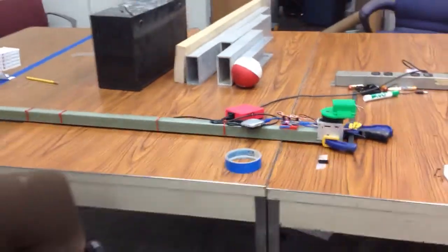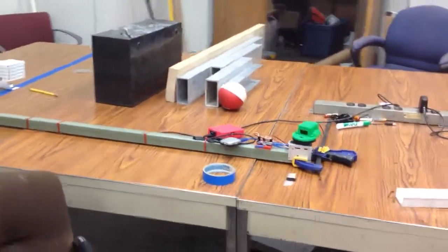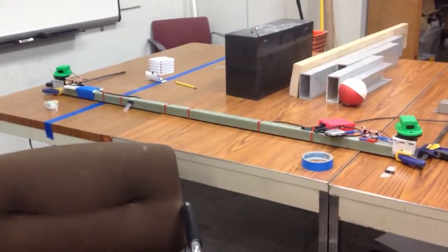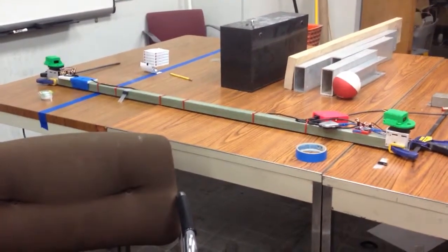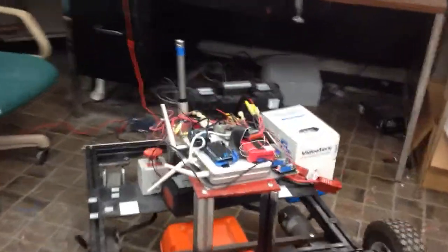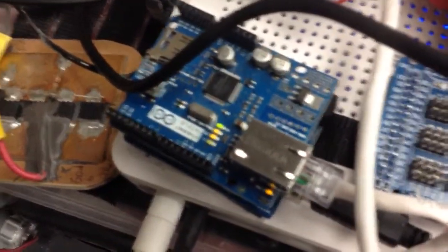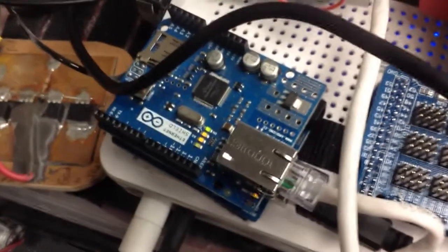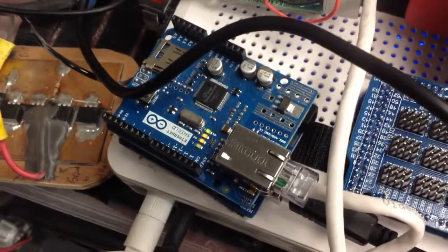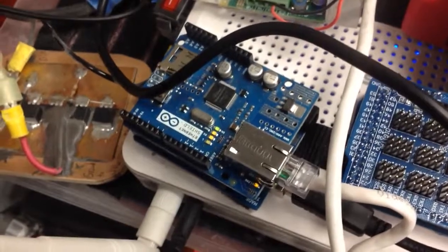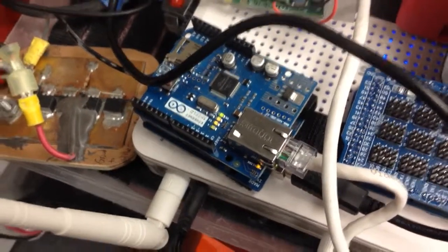Currently, this location system is not transmitting location data to the robot, but it is able to transmit the beacon command, turning the beacon on and off. This is our Arduino Ethernet shield on the robot that receives the beacon commands.